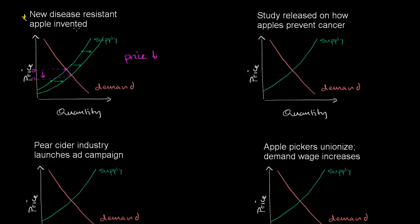You could have probably reasoned through that before taking an econ class, but this way you have a framework to think about how the curves are changing. Now let's think about this scenario — the graph shows what happened before the event. A study is released showing that apples prevent cancer. Well, no one wants cancer, so more people are going to be eager to have apples. This will change customer preferences — they will prefer apples even more at the supermarket. This clearly affects demand, and at a given price, people will demand a higher quantity of apples. The demand curve will shift to the right — demand goes up.